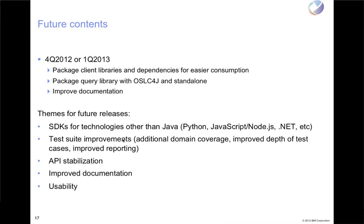We want to continue to improve the test suites — broader and deeper, as I mentioned before. We definitely want to make some improvements in the reporting in terms of consumability of the reports and ease of generating the reports. API stabilization would also be important. OSLC4J itself, the API is quite stable. The client library I'm not going to claim is stable at this point in time, although it's being used in several spots, but there are some improvements we want to make there.